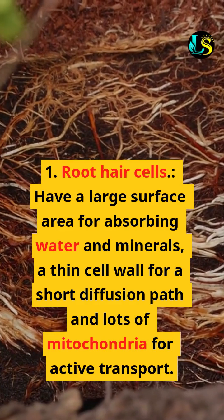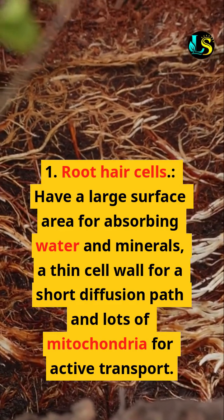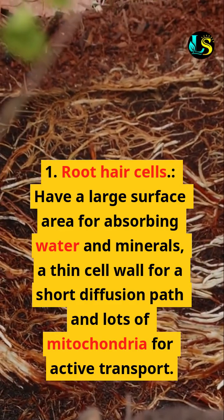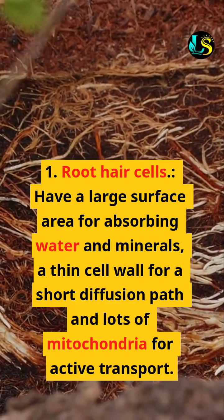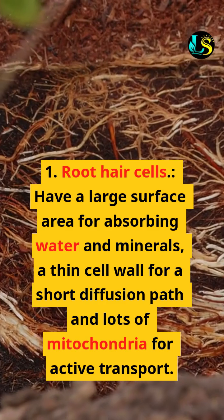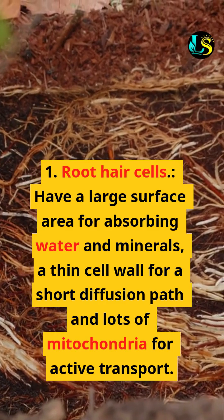1. Root hair cells have a large surface area for absorbing water and minerals, a thin cell wall for a short diffusion path, and lots of mitochondria for active transport.